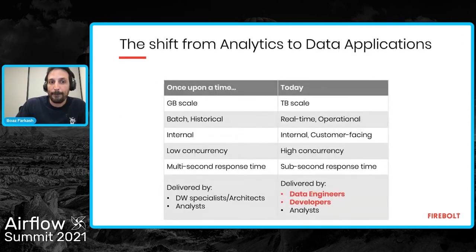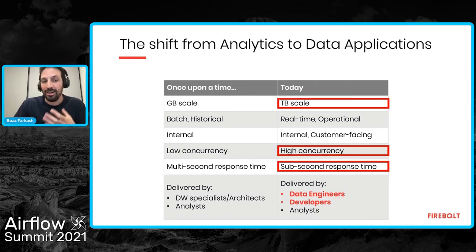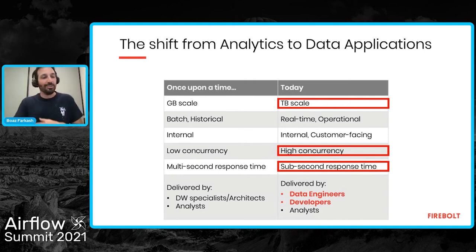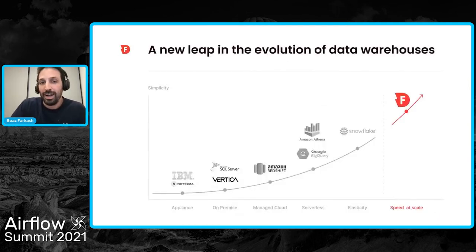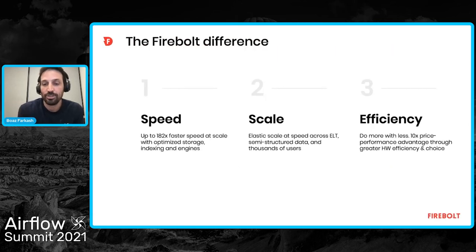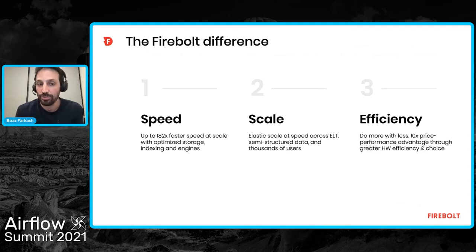Now let's shift to Firebolt. Modern cloud warehouses don't fully solve the scenario where we need terabyte scale, high concurrency, and sub-second response time — not yet. This is where Firebolt comes in. Firebolt is a relatively new cloud data warehouse, and we see ourselves as starting where the modern breed of cloud data warehouses ends. Our main differentiators are speed, scale, and efficiency. Speed: Firebolt is the fastest cloud data warehouse out there, typically by one or two orders of magnitude — something we typically demonstrate first in every POC.